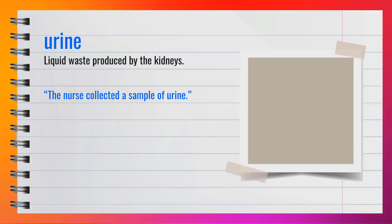The word urine, spelled U-R-I-N-E, is a noun. It refers to the liquid waste produced by the kidneys. For example, the nurse collected a sample of urine that might be tested to check for health issues. In summary, urine is the liquid waste your body expels through the kidneys.